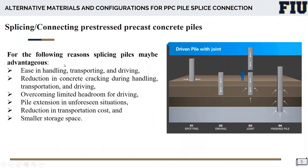For several reasons, it is necessary or preferred to do splicing of pile segments at the site. These reasons include ease of handling, transportation, and driving; reduction in concrete cracking during handling and transportation; overcoming limited headroom for driving; and situations where piles are not reaching the required strength during driving, necessitating splicing to continue — what we call enforcing situations. Sending smaller segments to the site also reduces transportation costs and storage space.